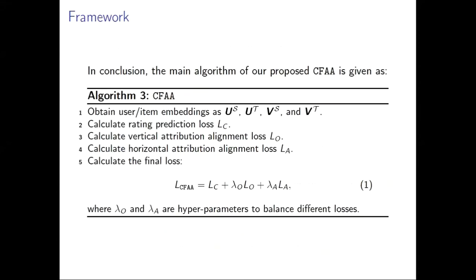In conclusion, the main algorithm of our proposed CFAA is given as below. First, we should obtain user item embeddings as us, vs, ut, vt. Then we calculate the rating prediction loss LC on the rating prediction module. Then we calculate vertical and horizontal attribution alignment loss LO, LA. Finally, we combined all these losses together with λO and λA as hyperparameters to balance different losses.